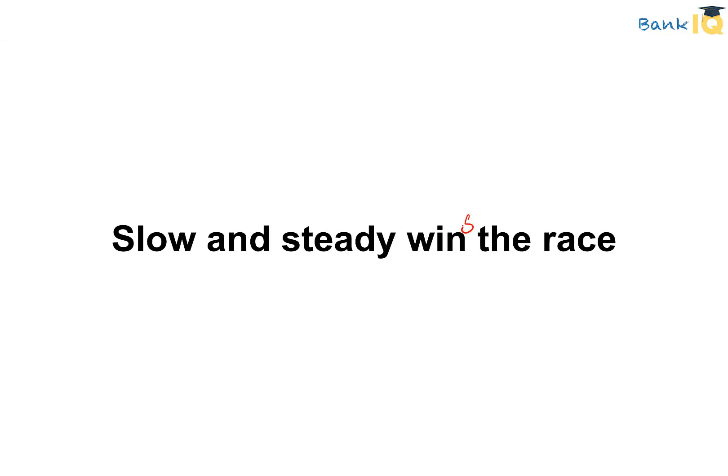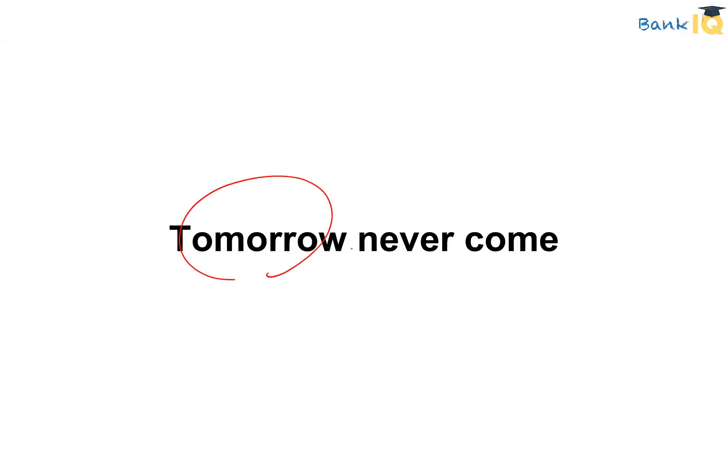Moving on to the next ones: 'Slow and steady win the race' should use 'wins.' For 'Tomorrow never come' — tomorrow is singular, so a singular verb is required. The correct usage is 'Tomorrow never comes.' Similarly, 'Neither red nor black suit me' — the subject refers to a singular cloth, so we use the singular verb: 'Neither red nor black suits me.'